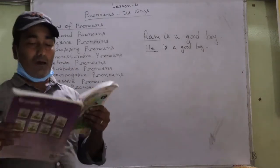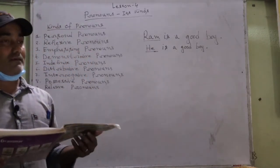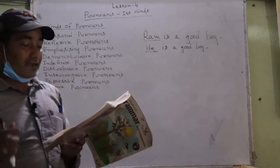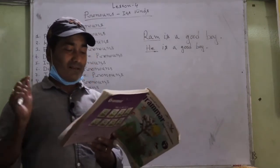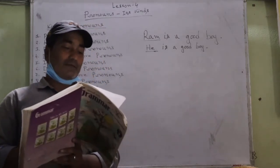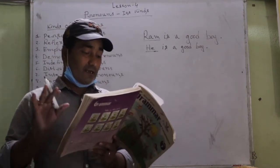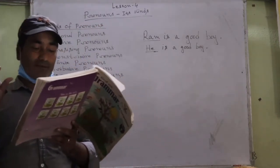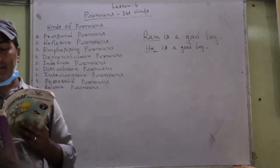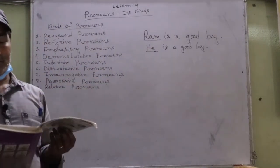So in this way we have learned about pronouns and their kinds. Remember that there are nine kinds of pronouns: personal pronouns, reflexive pronouns, emphasizing pronouns, demonstrative pronouns, indefinite pronouns, compound pronouns, distributive pronouns, interrogative pronouns, and possessive pronouns. That's all for today's class.